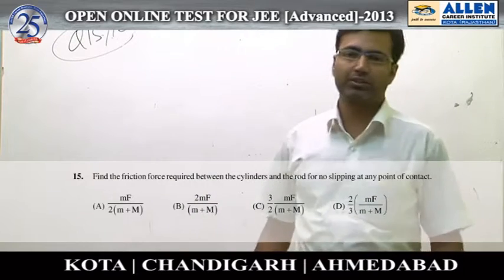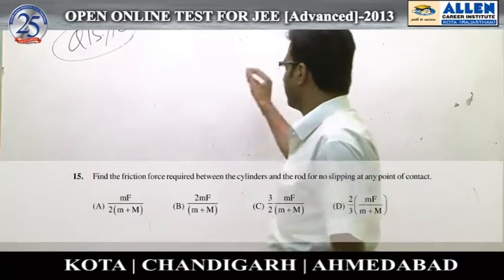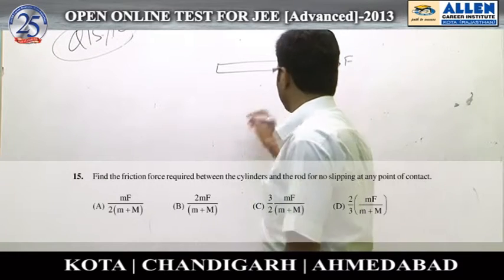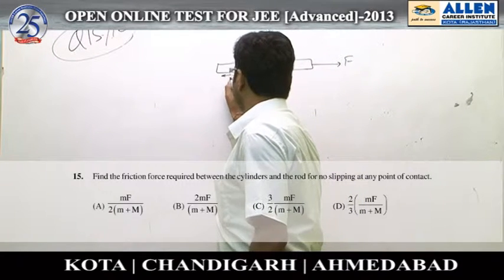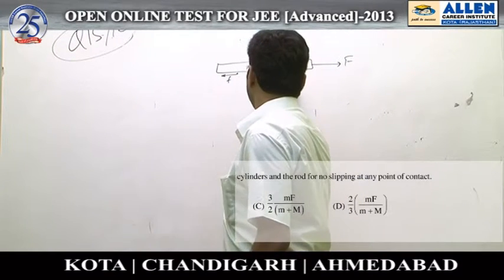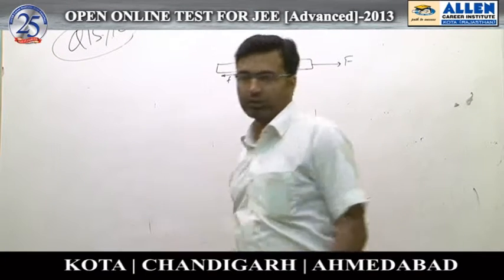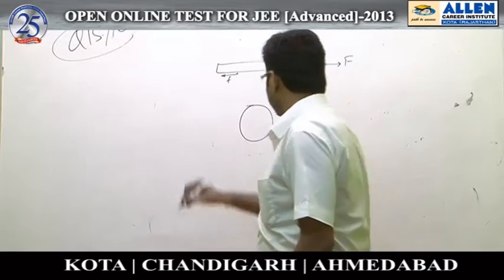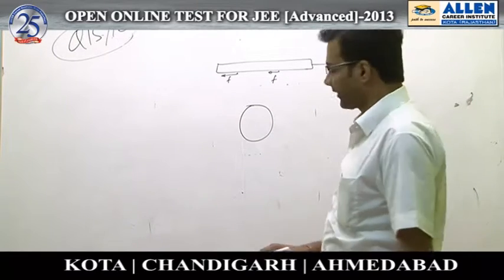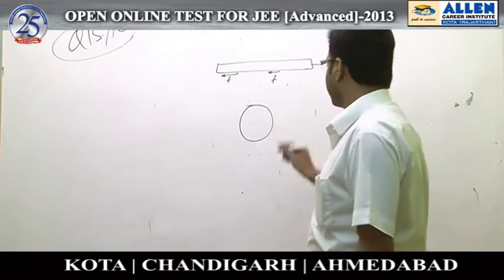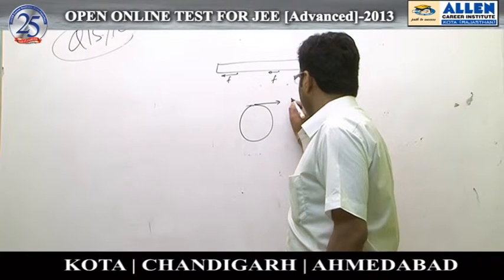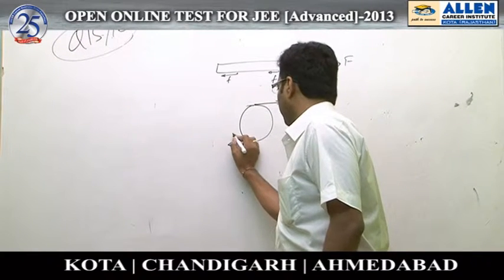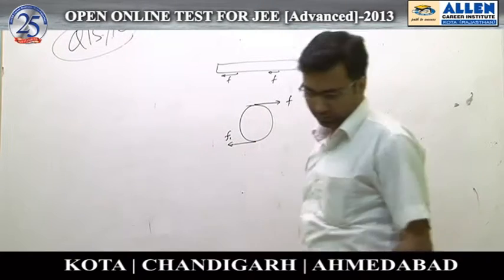This is the standard question on rolling. So draw the FBDs. The rod here is being pulled by some amount of force. Friction acts here and here. Remember, this has to be static friction. Similarly, for the disks, you can draw for one of the disks. This friction happens to act in the forward direction. Another friction from the floor, let us say F1, acts in the backward direction.